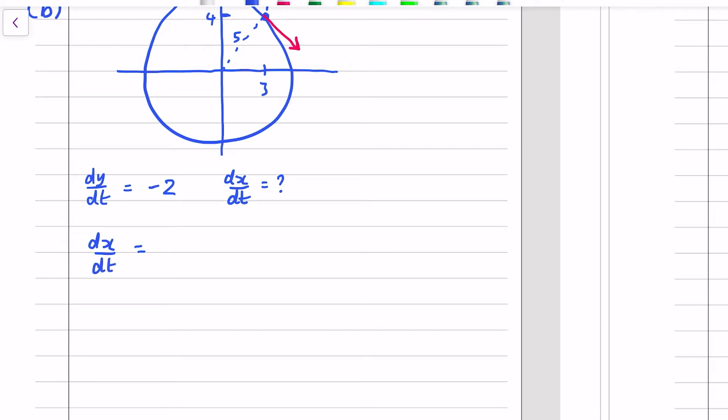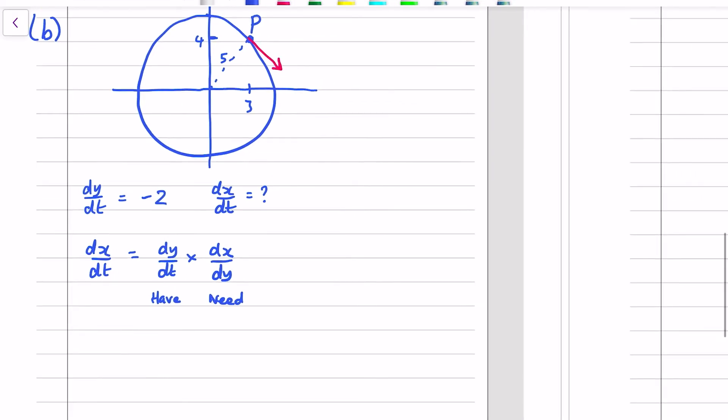And a standard approach to this would be to go dx dt equals dy dt times by dx dy. That would be a related rates kind of question. Merit level, maybe excellence level, where you set up this equation. And it's like you have this one, and you need this one to find the dx dt. And so x and y, this rate here, dx dy, comes from differentiating the circle equation. x squared plus y squared equals 25. And we can make x the subject of it, and then differentiate with respect to y. Or we could make y the subject of it, differentiate with respect to x, and then flip it upside down. I'll do the first method, which is to go x equals... There is an easier way to do this, by the way. I'm going to look at it in a sec.